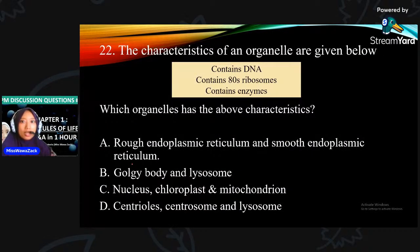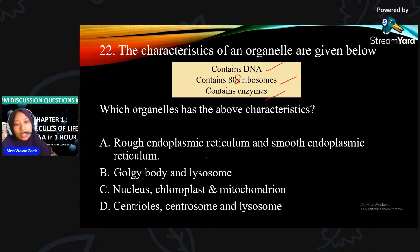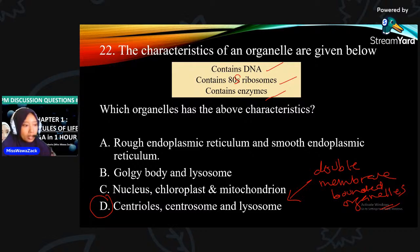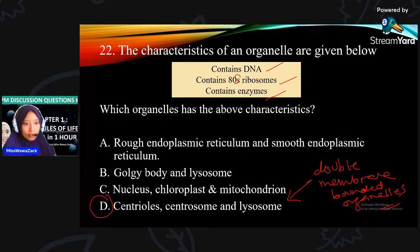Number 22: the characteristics of organelle are: ada DNA, ada ribosome bersaiz 80S, dan contain enzyme. Hanya organelle tertentu yang ada their own DNA, their own ribosome, and their own enzymes. They are double membrane bounded organelle. Tiga-tiga ini sahaja yang ada ciri yang sama iaitu D.